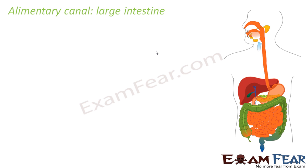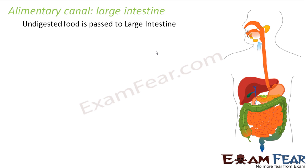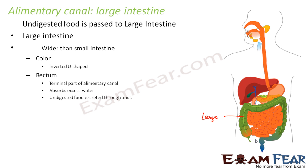Next is the large intestine, the last part of the alimentary canal. Undigested food passes from the small intestine to the large intestine. The large intestine is wider than the small intestine and the undigested food passes through it to be finally excreted out through the anus.